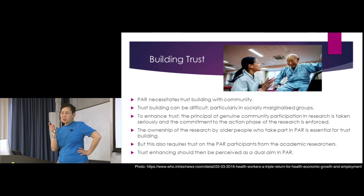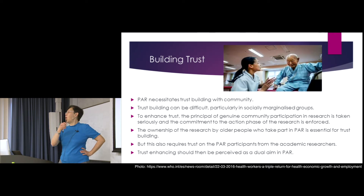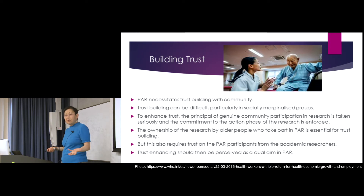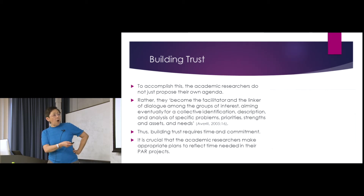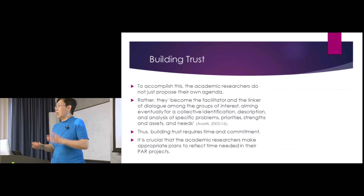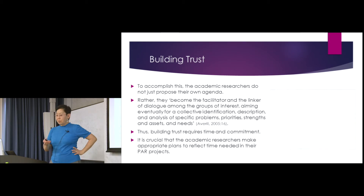Building trust — older people don't trust younger people, so we really have to build that. How can you do that? Participate, help, even with transport and all sorts of things. That's very similar to doing research with other marginalised vulnerable groups. We have to build trust with participants before they will take part in your research. What we can do is not just propose our own agenda but their own agenda — they have to become an important part of the PAR. Emphasize that this project is about their issue.